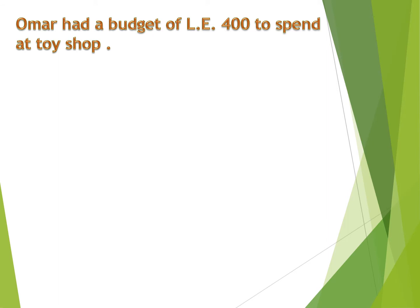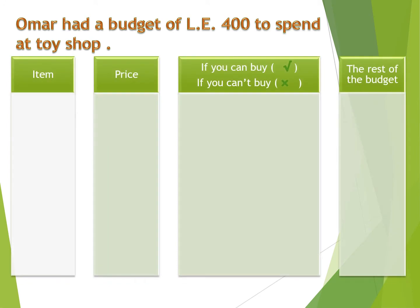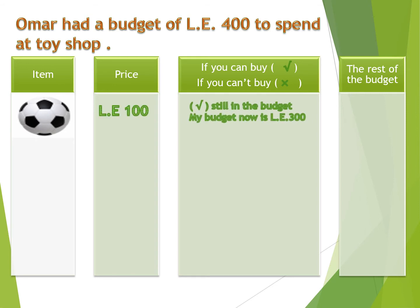Omar had a budget of 400 pounds to spend at a toy shop. The table has columns: item, price, whether you can buy it (tick or cross), and the rest of the budget. First item: a poll, its price is 100 pounds. Yes, make a tick — still in the budget. My budget is now 300 pounds: 400 minus 100 equals 300.